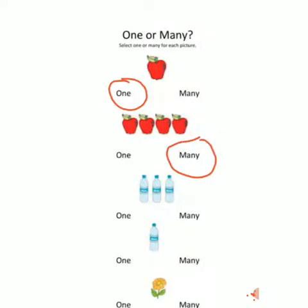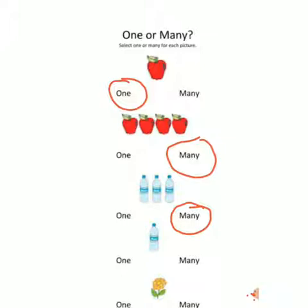Third one — what is this, students? Bottle. The bottle is more than one. Is it more than one? Yes. So circle many. Many means more than one — you have to learn this. And now downside, here is only one water bottle, so we will circle one.